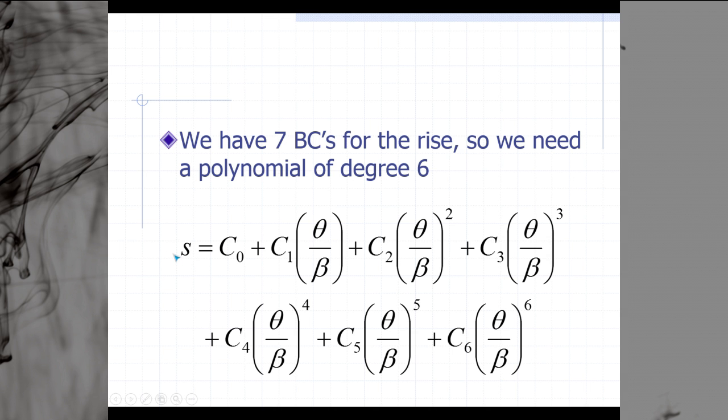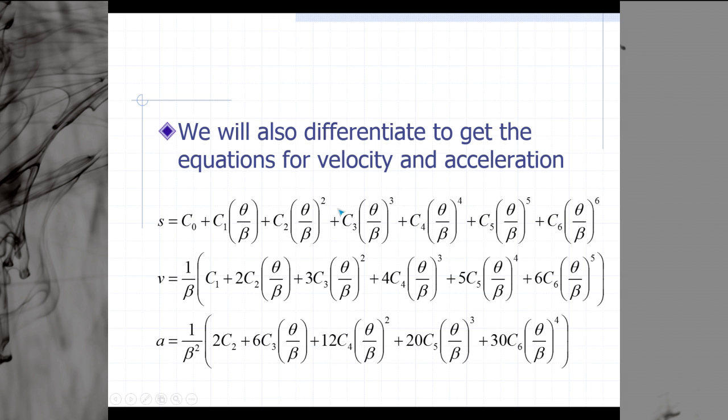This is always how we begin when we're doing a polynomial CAM design. We start with this generic equation, where it's always going to start at c0, and it's going to go as high as equal to our boundary conditions minus 1. In this case, we have 7 boundary conditions, so we go all the way up to 6.